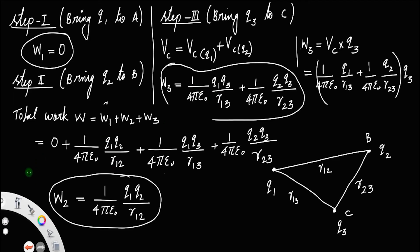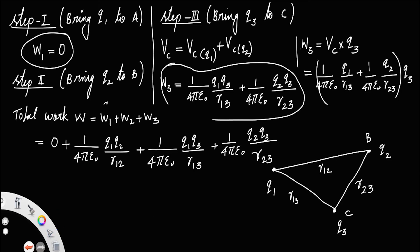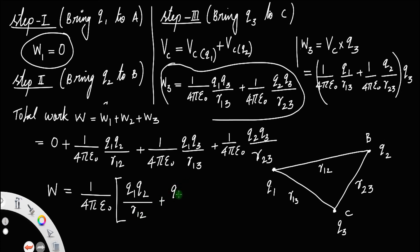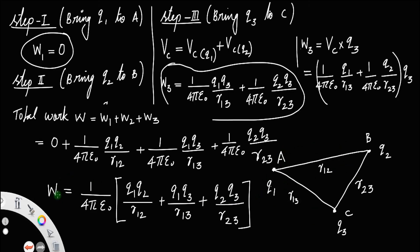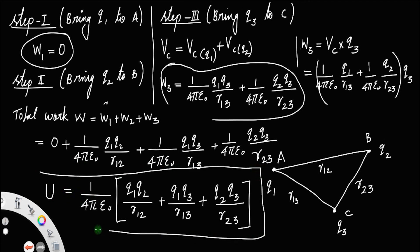Simplifying by factoring out 1/4πε₀, the total work done — which is stored as potential energy — is: U = (1/4πε₀) × [q1·q2/r12 + q1·q3/r13 + q2·q3/r23]. This is the potential energy of the three-charge system.